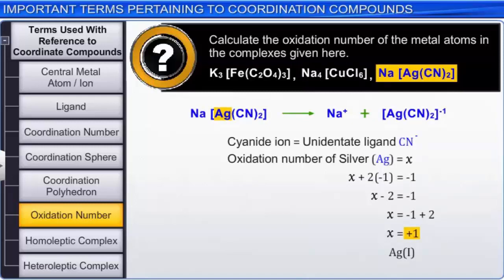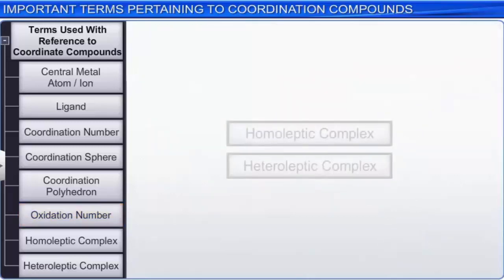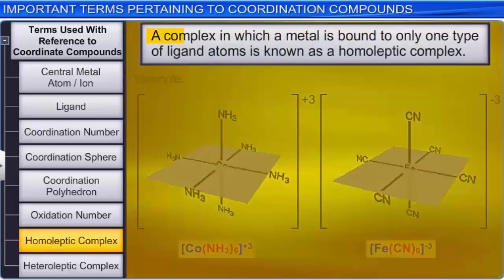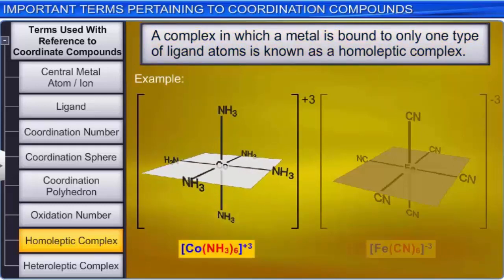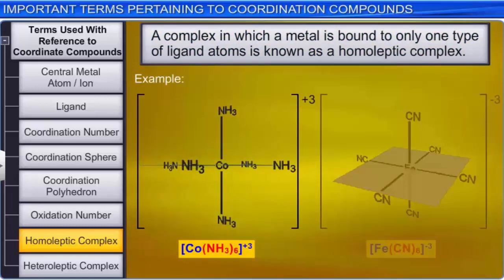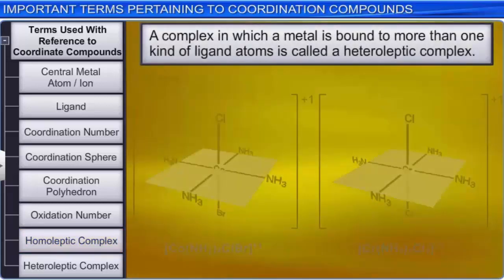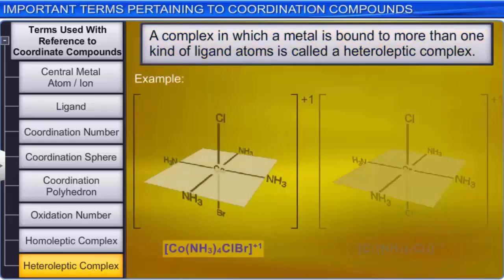Finally, let's look at the terms homoleptic complex and heteroleptic complex. A complex in which a metal is bound to only one type of ligand atoms is known as a homoleptic complex. For example, [Co(NH3)6]3+ and [Fe(CN)6]3-. On the other hand, a complex in which a metal is bound to more than one kind of ligand atoms is called a heteroleptic complex. For example, [Co(NH3)4ClBr]+ and [Cr(NH3)4Cl2]+.